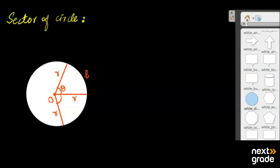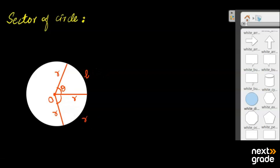For example, this radial segment is 5 cm. This radial segment is also equal to 5 cm, and this arc is 6 cm. When the radial segments and arcs satisfy certain conditions, you must always remember that the angle will be measured in radians.